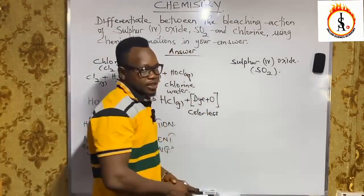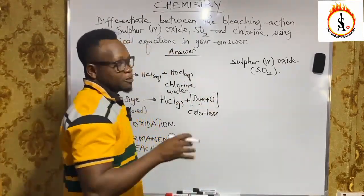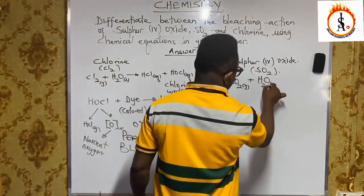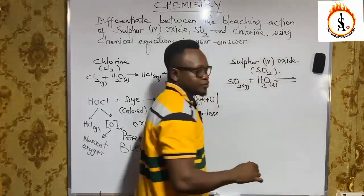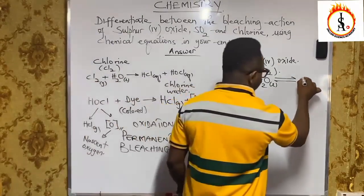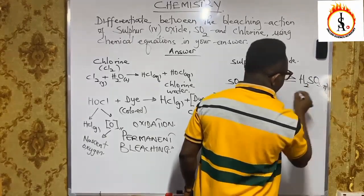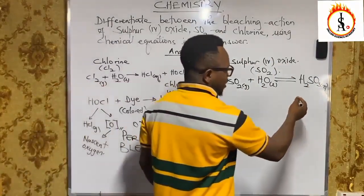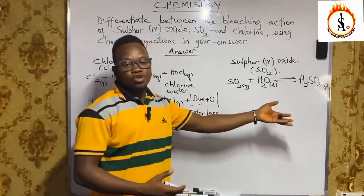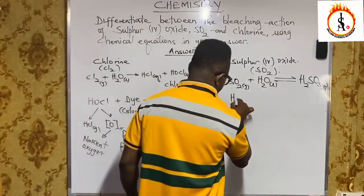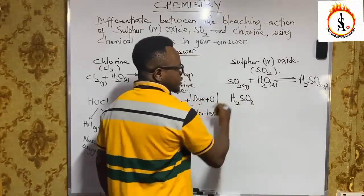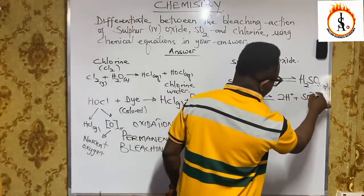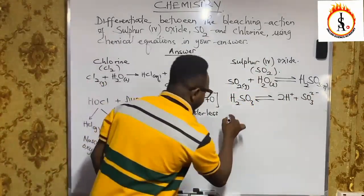On the other hand, sulfur dioxide also bleaches in the presence of water. When SO₂ gas reacts with water it produces a weak acid: H₂SO₃ (aqueous), called sulfurous acid or trioxosulfate(IV) acid. This H₂SO₃ breaks into two hydrogen ions and the sulfite ion SO₃²⁻.